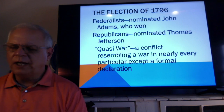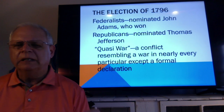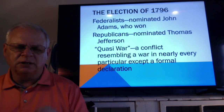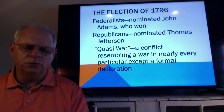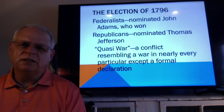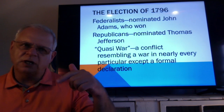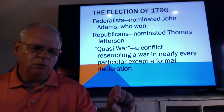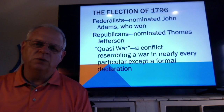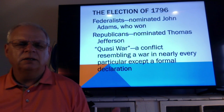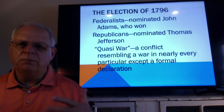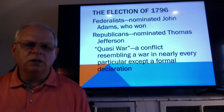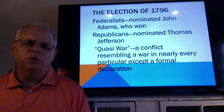The Federalists nominated John Adams — Alexander Hamilton was the top name but was considered too controversial and antagonistic, so he was likely to lose. The Republicans nominated Thomas Jefferson. Under the Constitution at this point, the one who got the most votes won the presidency, and the one with the second most votes became vice president. Both parties had someone in mind for vice president from their own party, but that's not how the vote ended up working.